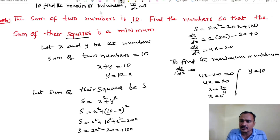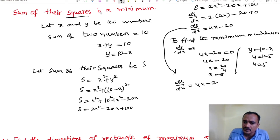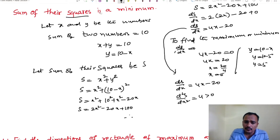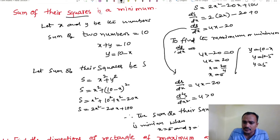y equals 10 minus x, so y equals 10 minus 5, y equals 5. Now for the second derivative: dS/dx equals 4x minus 20, so d²S/dx² equals 4, which is positive and greater than 0. Therefore, the sum of squares is minimum when x equals 5 and y equals 5.